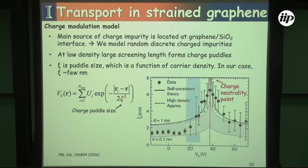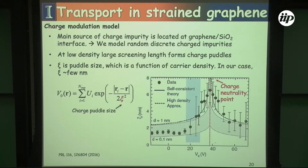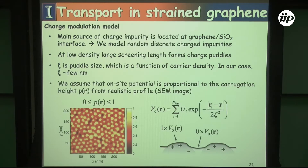We fix the charge puddle size at a couple of nanometers, and we can see that this size and the strength of these interactions depends quite a bit on the distance of the graphene sheet from the charged impurities. This is the model we use — the dashed line is a self-consistent theory from that paper, and you can see it follows the data quite nicely as an approximation for the impurity potential we put into the Green's functions.